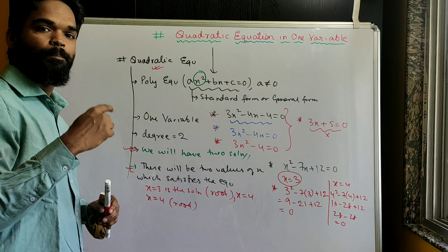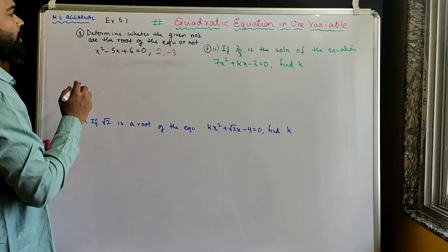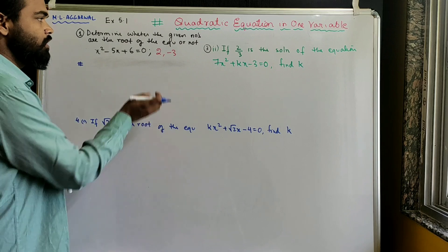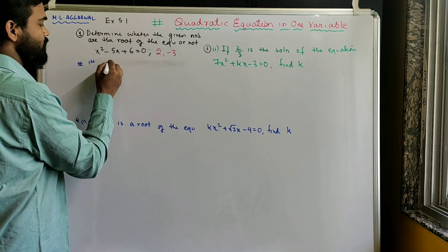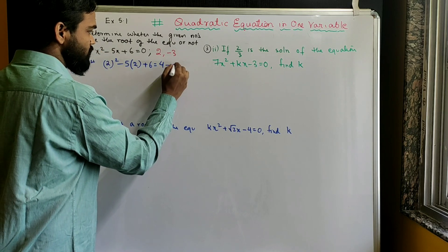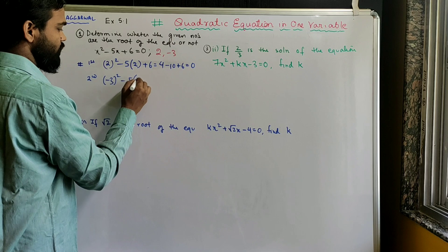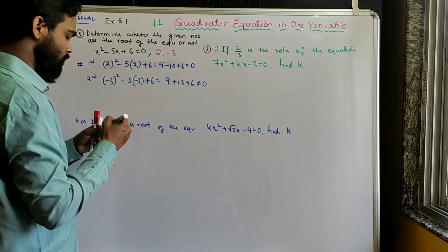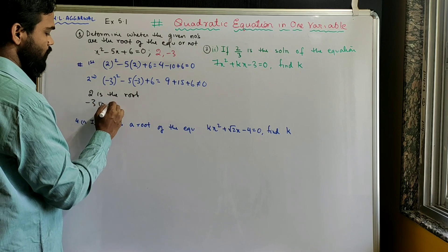Now look at Exercise 5.1 from M and Agarwal, based on these properties. The first sum asks us to determine whether given numbers are roots of the equation or not — just substitute and check if the result equals zero. For x = 2: 2² - 5×2 + 6 = 4 - 10 + 6 = 0, so 2 is a root. For x = -3: (-3)² - 5×(-3) + 6 = 9 + 15 + 6 ≠ 0, so -3 is not a root.